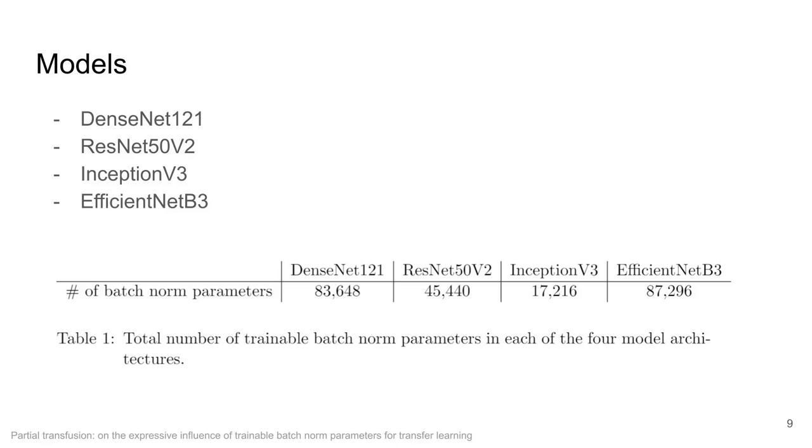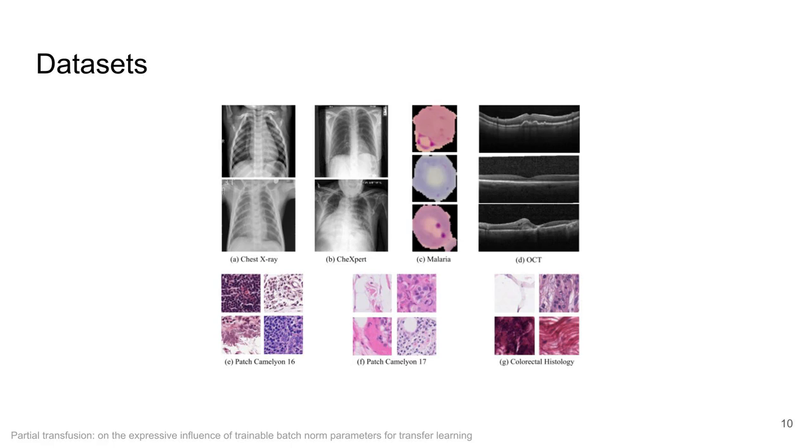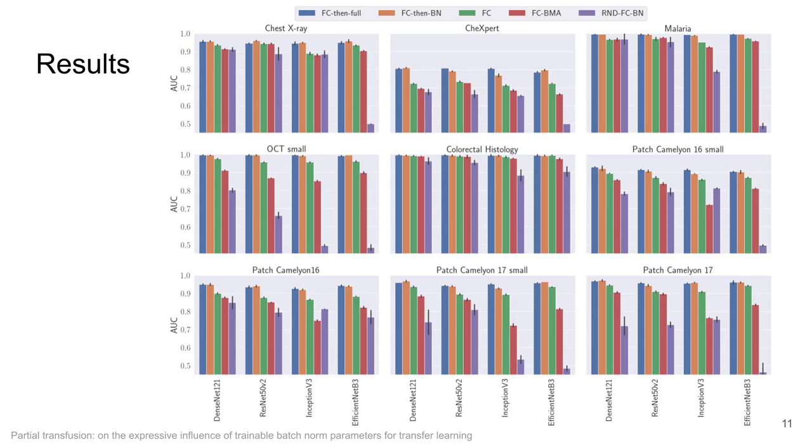We ran our experiments with four different model architectures, each having a different total number of trainable batch norm parameters. We used seven publicly available datasets consisting of chest x-rays, cells, OCT and histopathology. We performed three repetitions of each experiment and computed the classification ROC AUC for the different models and datasets.